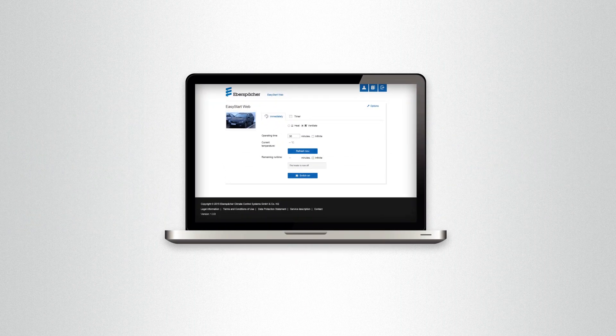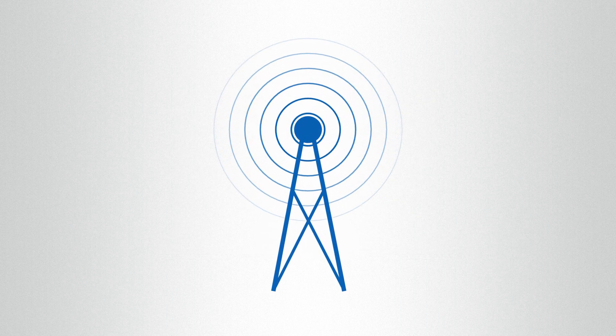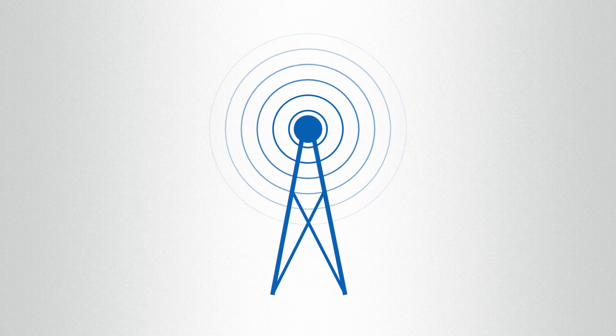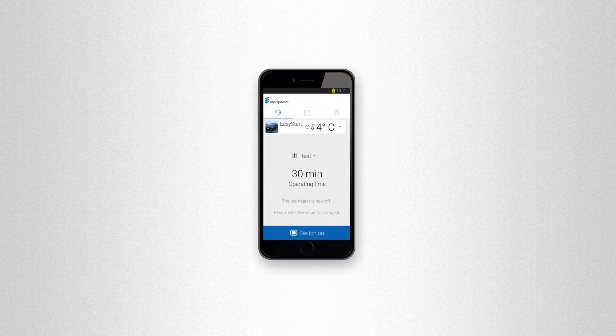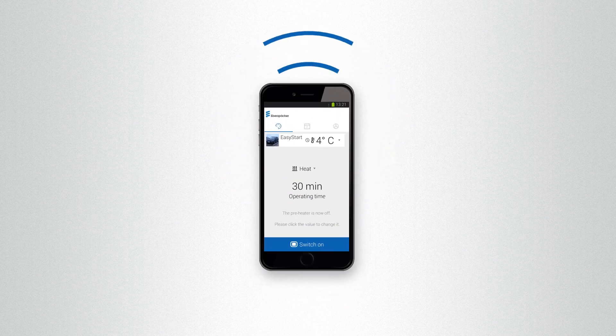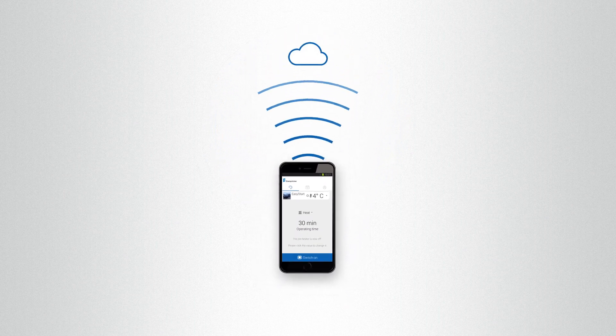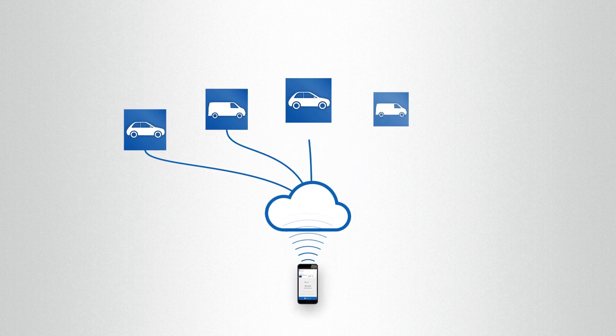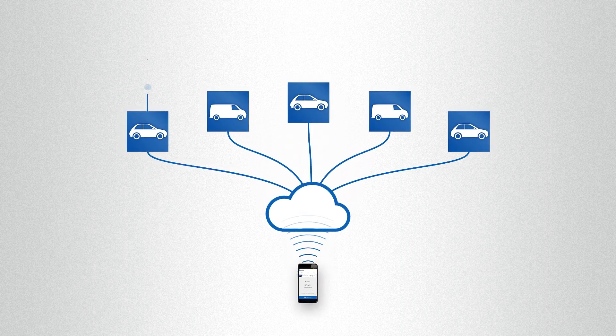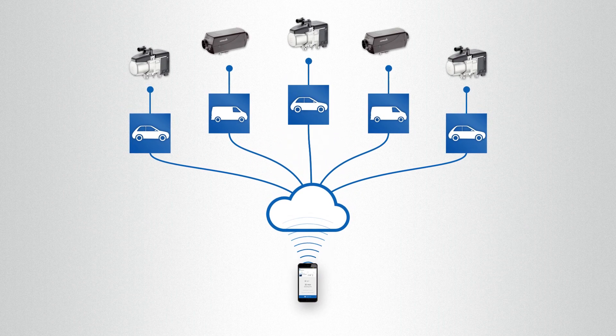After it has been installed, Easy Start Web is always set up to use the mobile network with the strongest signal, including from other countries with no extra charges. If you have a user account, you can control up to five Easy Start Web applications.